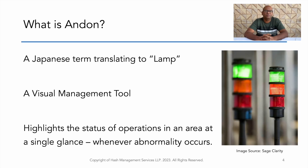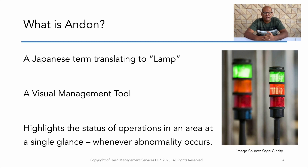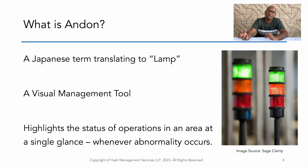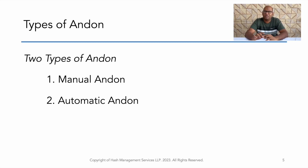So what is Andon? Andon in Japanese language means lamp — a visual device which will give you some information. It is a visual management tool that highlights the status of operations in a particular area at a single glance. Whenever there is an abnormality it gives a visual indication. There are two types of Andon lights: one is a manual Andon and another is an automatic Andon.